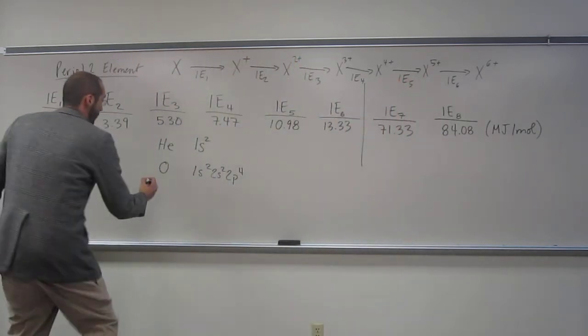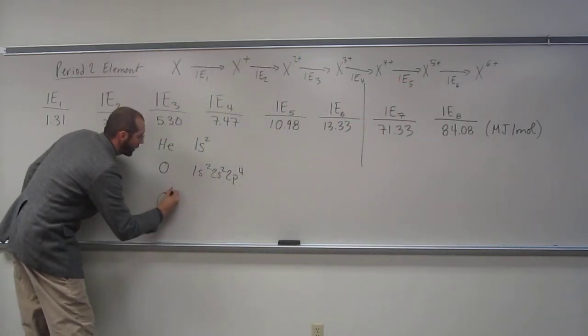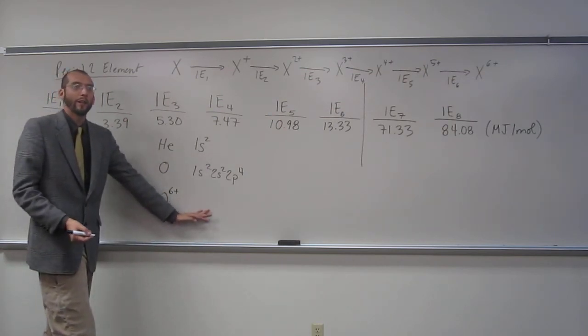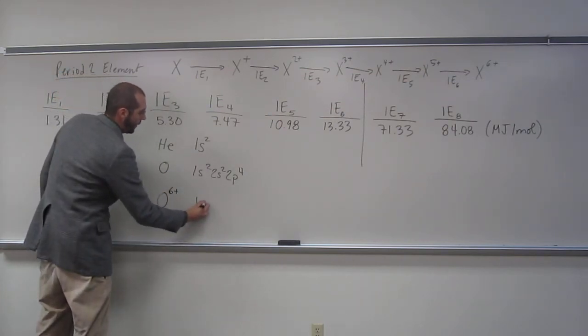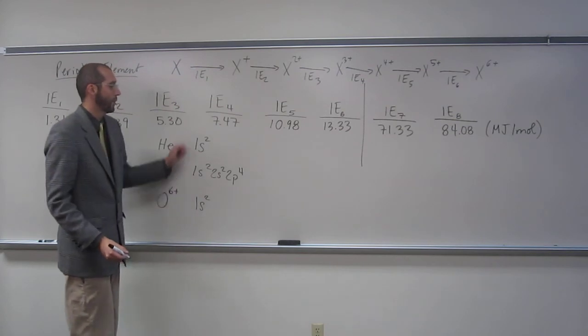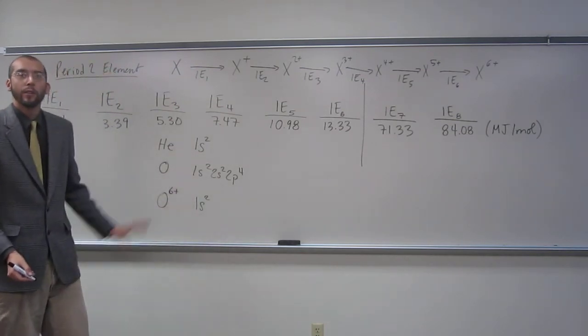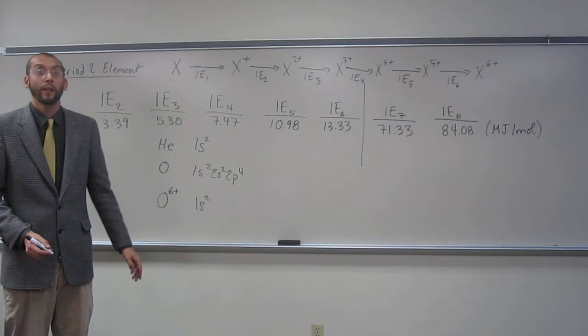So what did we get? We got oxygen 6 plus. What's the electron configuration of that ion? 1s2. Is that isoelectronic with helium? So then this is that element, okay?